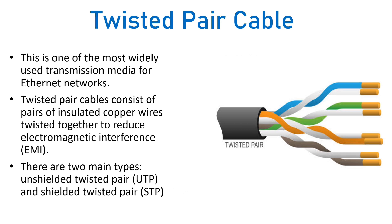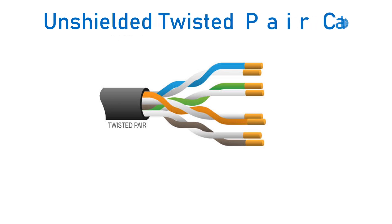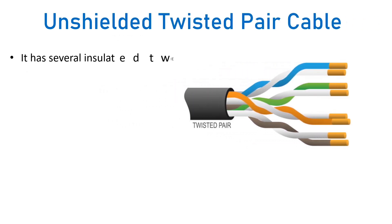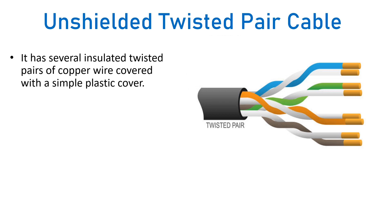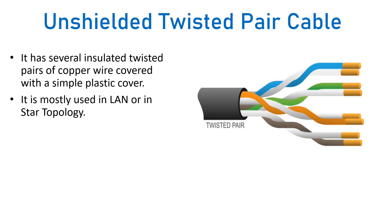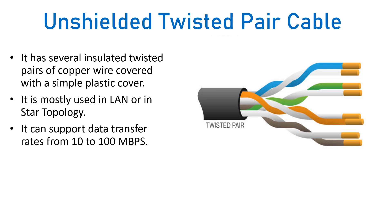Unshielded twisted pair (UTP) cable has several insulated twisted pairs of copper wire covered with a simple plastic cover, with no extra coverings. It is mostly used in local area networks, especially in star topology. UTP supports a data transfer rate from 10 to 100 Mbps, giving it high bandwidth.